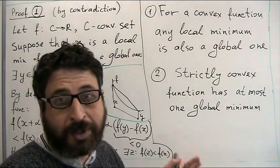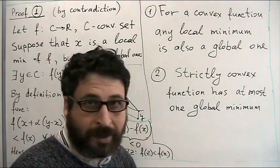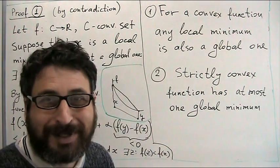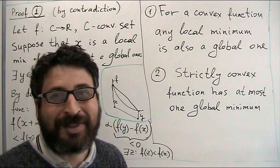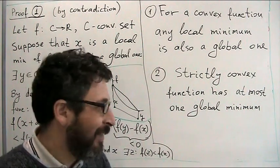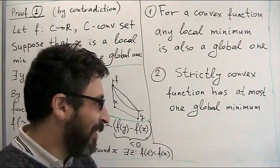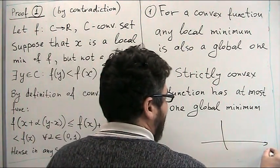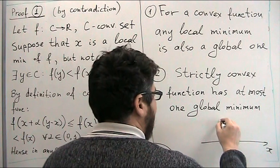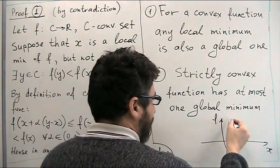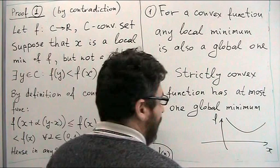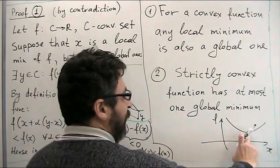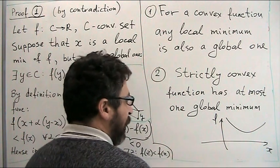When our function is convex, the situation with global and local minima is much better than for a general function. This is clearer even from a one-dimensional picture. The convex function looks like this — in this picture we have one local and one global minimum.